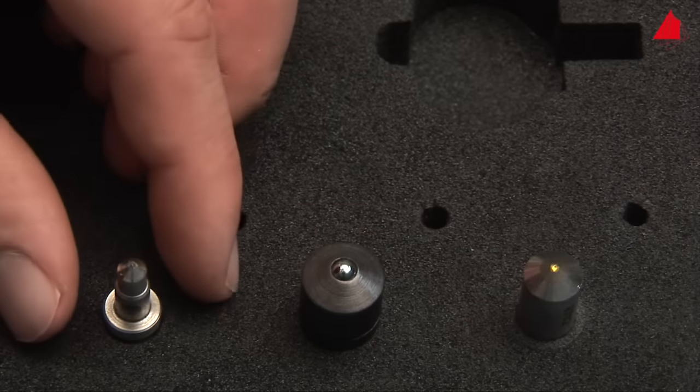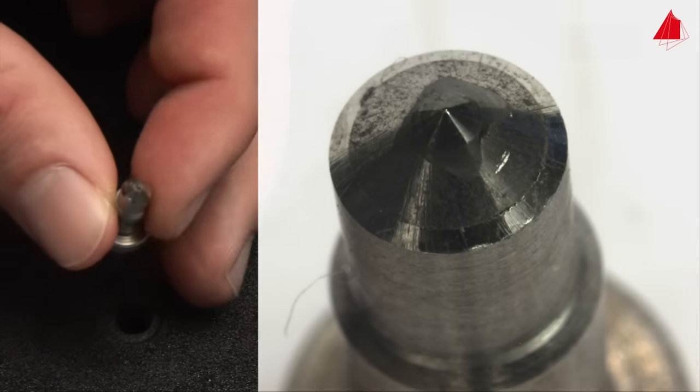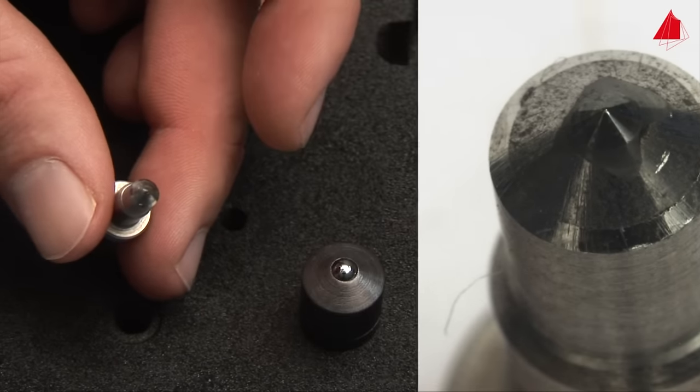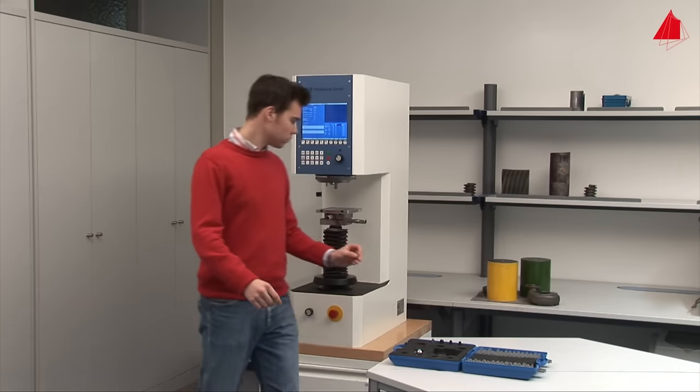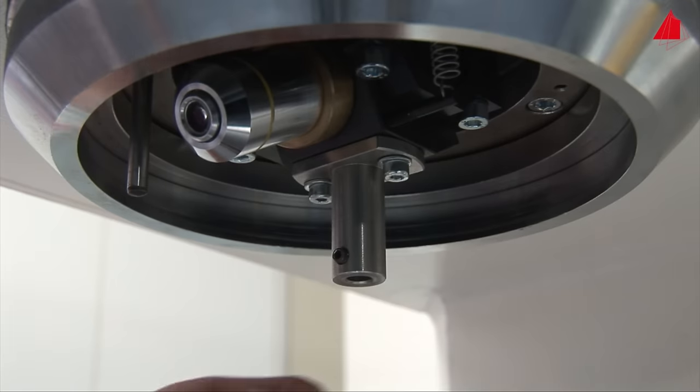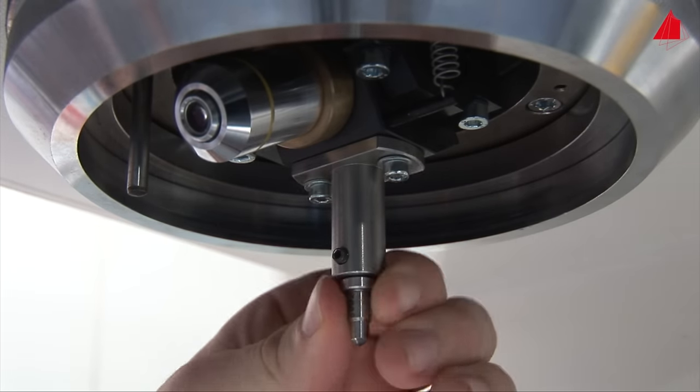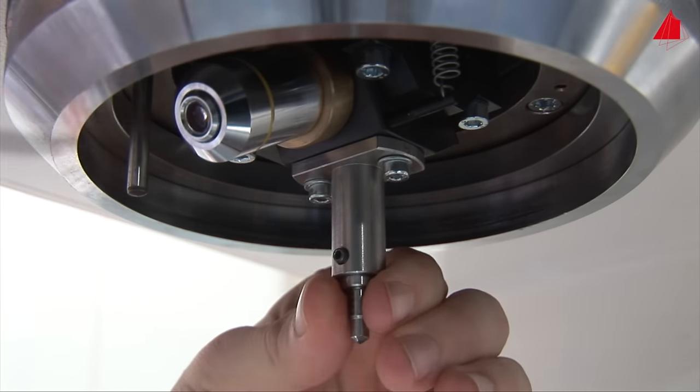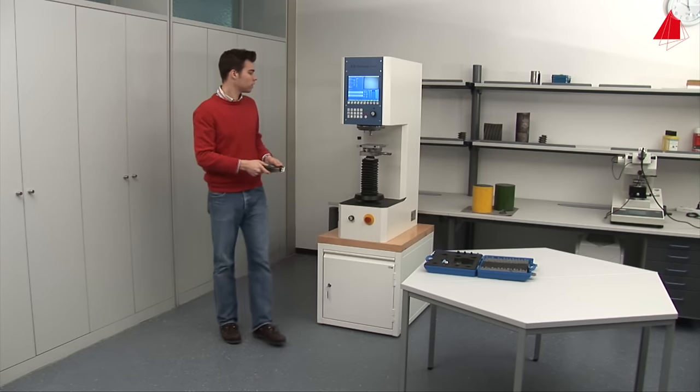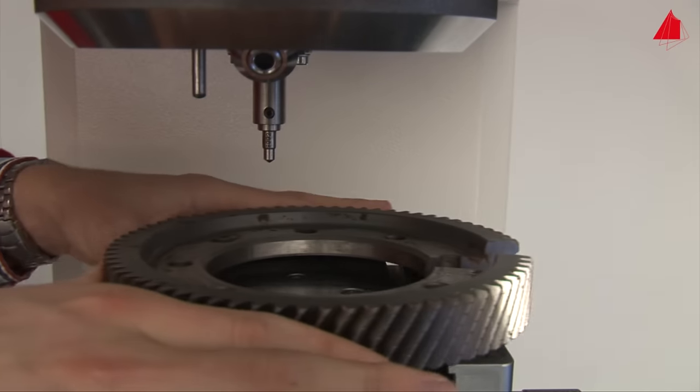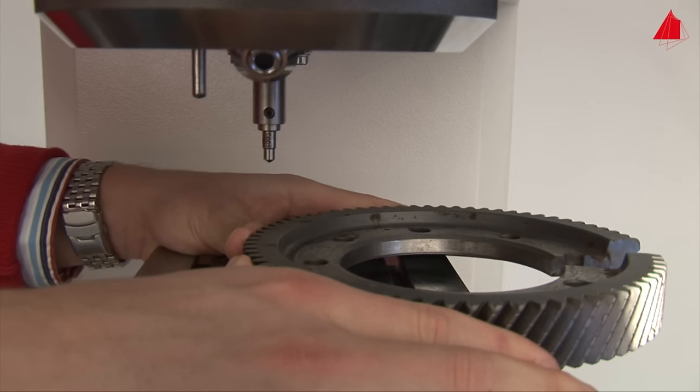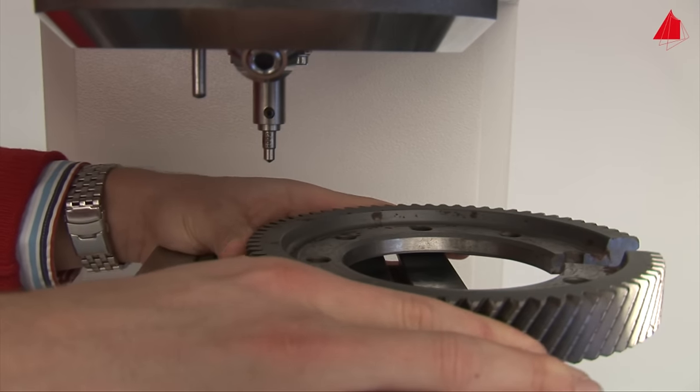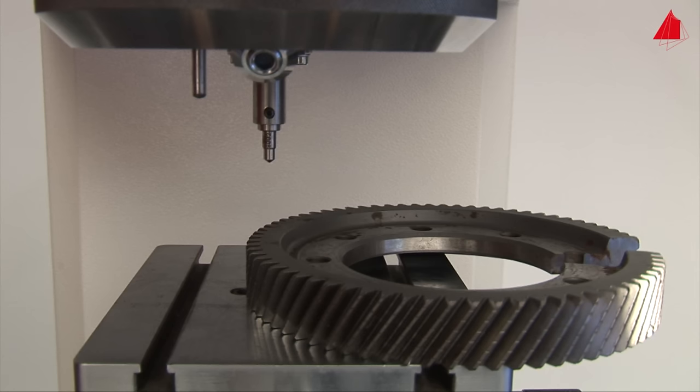The tester selects the conical diamond indenter and installs it in the testing machine. Then he picks up the gear wheel and puts it on the support table.